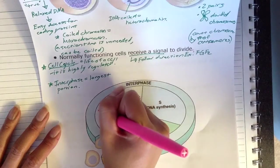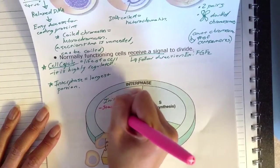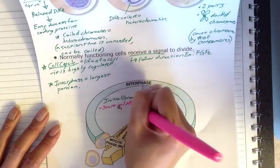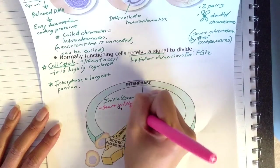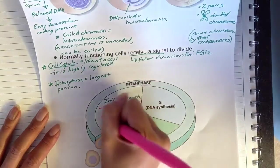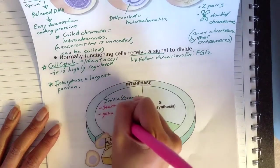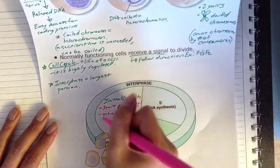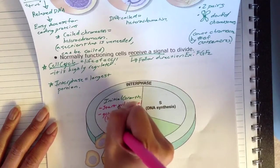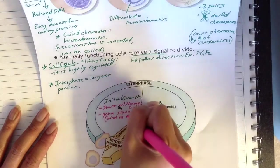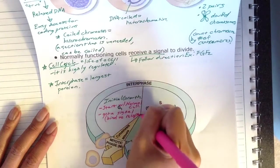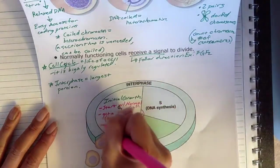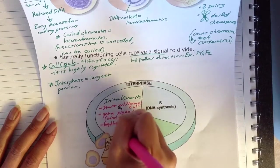So G1 is normally starting with a normal cell. And then you actually get a signal to divide. A lot of times, this signal is going to bind to a receptor. And again, it's highly regulated.